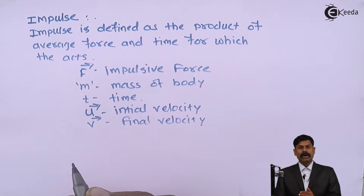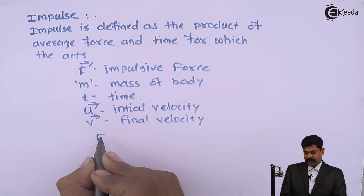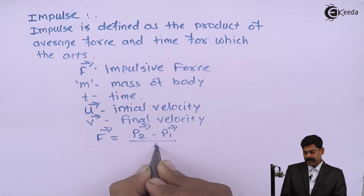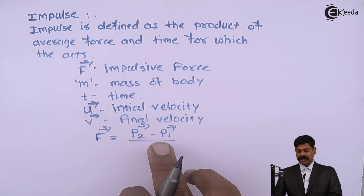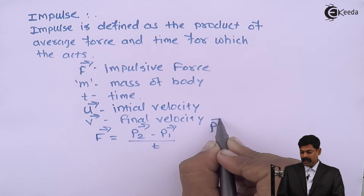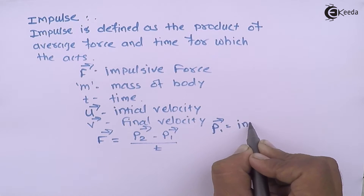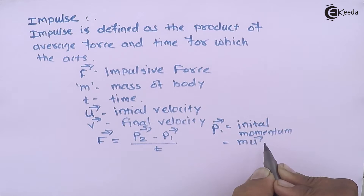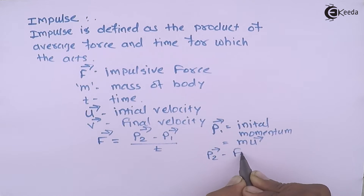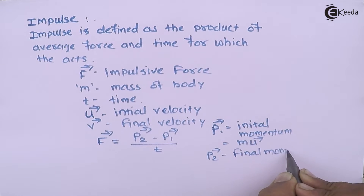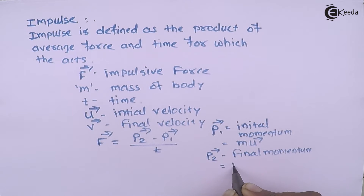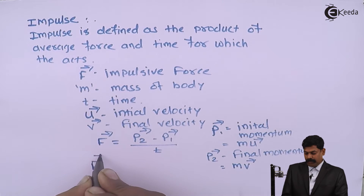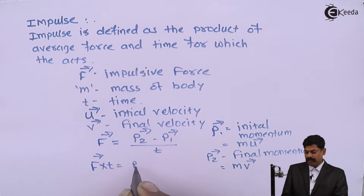According to Newton's second law, the impulsive force equals (P2 − P1) / T. So impulsive force F = (P2 − P1) / T, where P1 is the initial momentum, equal to mass multiplied by initial velocity. Rearranging, impulsive force multiplied by time T equals P2 − P1.